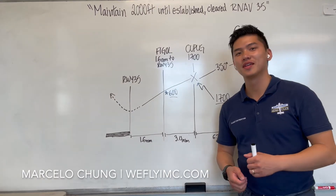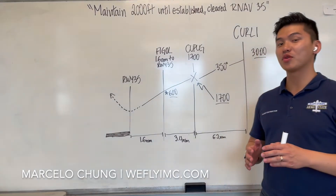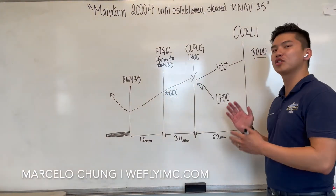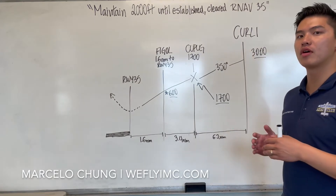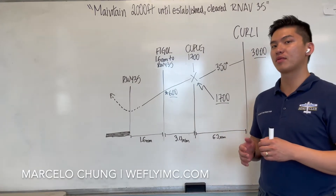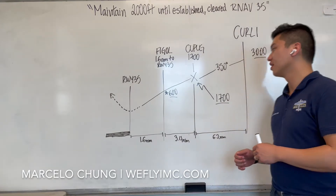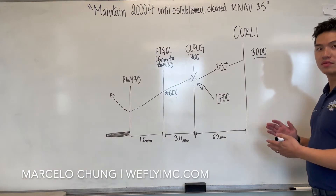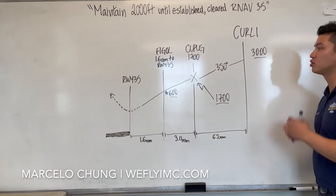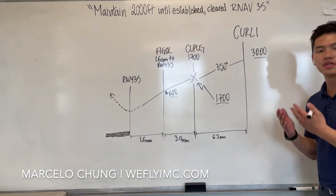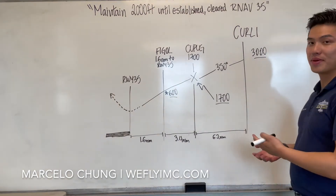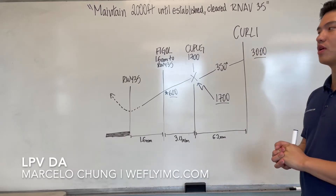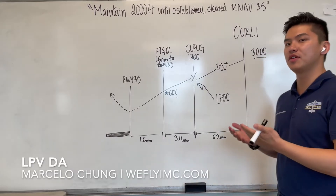Welcome to my video. Today I'm going to show you how to understand and interpret the minimums for the Norwood RNAV 3.5 approach. I've recreated the profile view of the approach to explain all the minimums. We'll start with the LPV minimums.